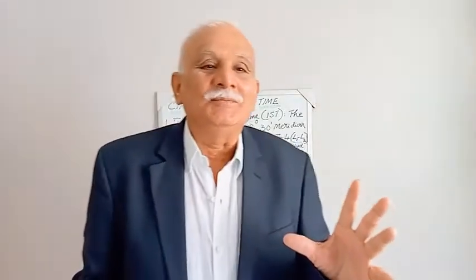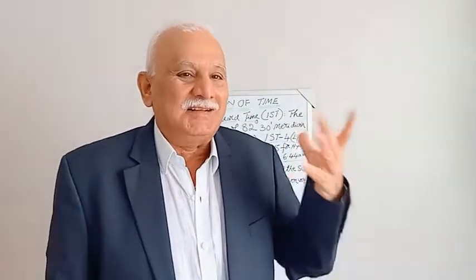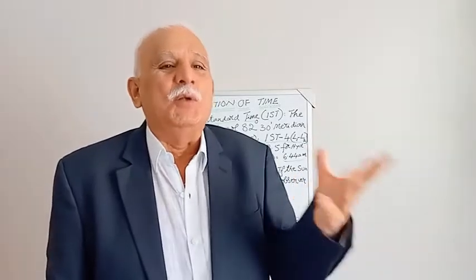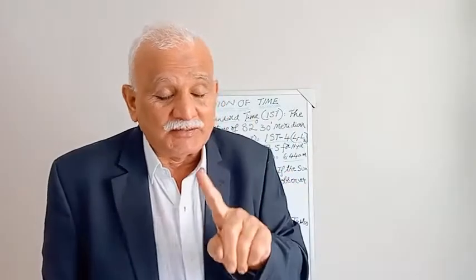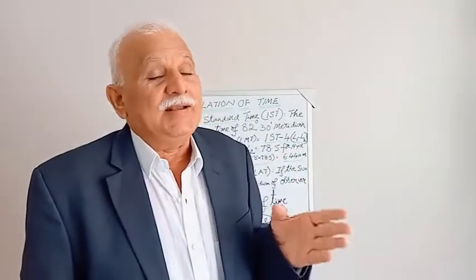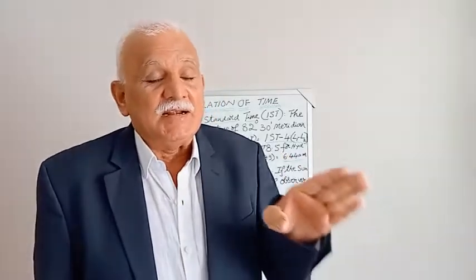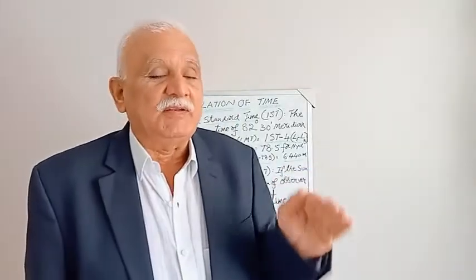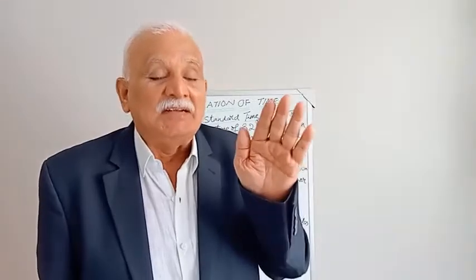For the calculation of time, the earth is considered as a round sphere of 360 degrees. It makes one rotation around itself in one day, which is 24 hours. So 360 degrees divided by 24 hours gives us 15 degrees per hour. This is the basic relationship between degrees and time.